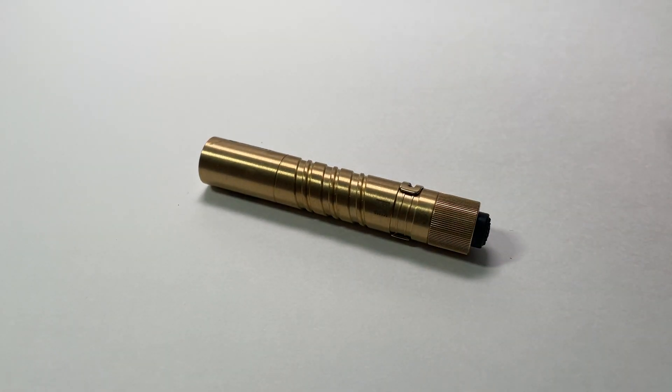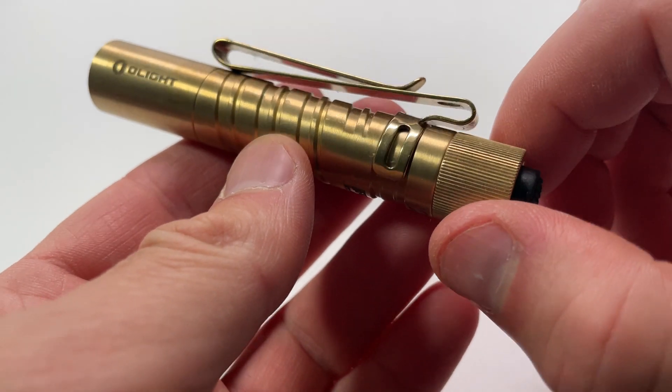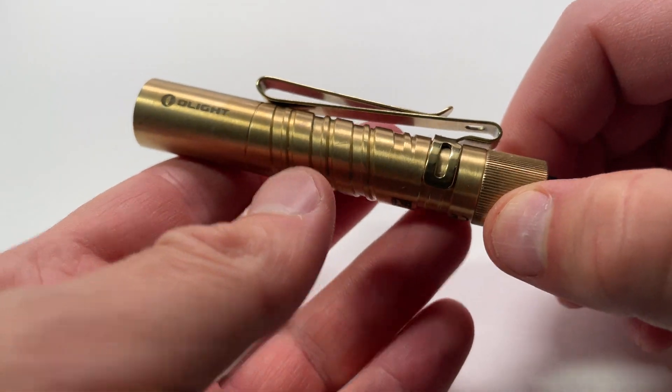And this is the Olight I3T EOS in a brass body. So it's quite heavy, but also very good looking, at least in my opinion.